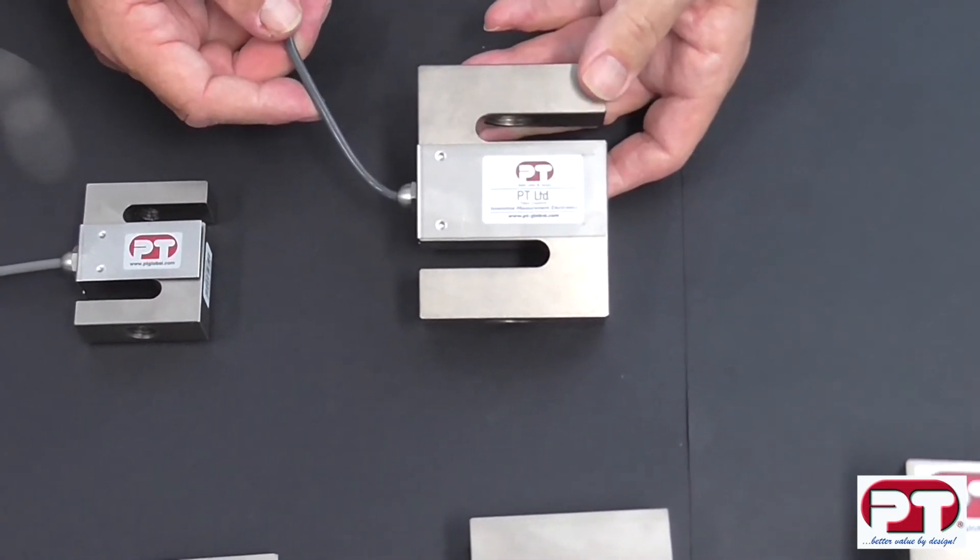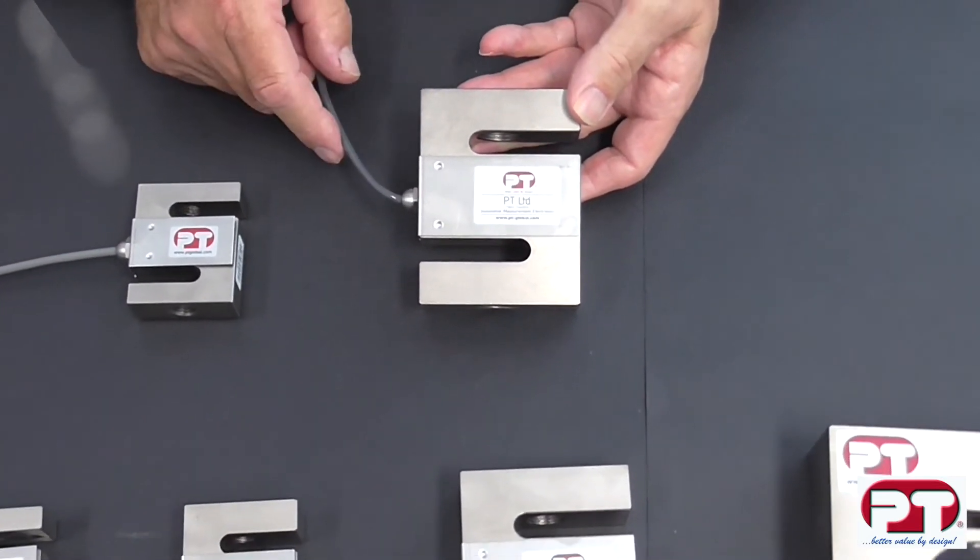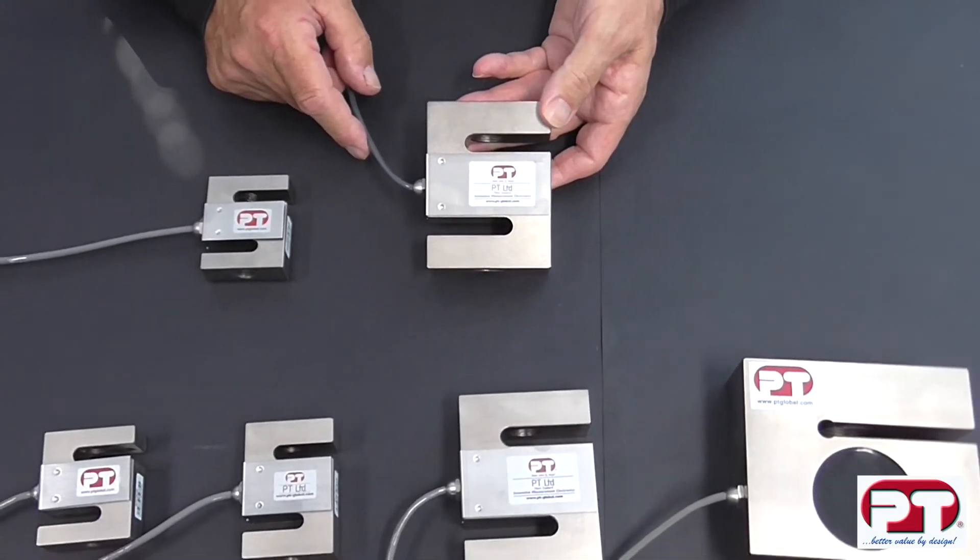Examples of applications. It is used in both tension and compression weighing. Ideal for hanging tanks, bin hoppers, crane weighing, and material testing applications.